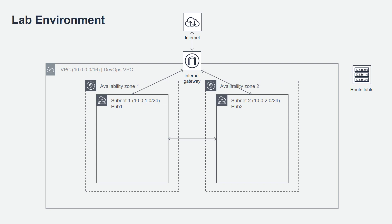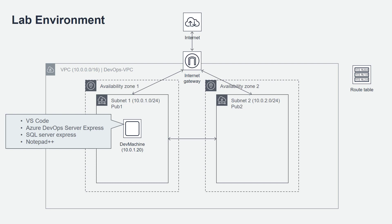What we are going to do next is spin up two EC2 instances. The first one is the dev machine with the IP address 10.0.1.20. It's very important to note this down because you are going to start this machine with this IP address. This machine we are going to spin up with an already pre-built image that has Visual Studio Code installed. It also has Azure DevOps Server Express and SQL Server Express already installed as its backend storage, and also some useful tools like Notepad++ installed. The Azure DevOps Server on this machine comes with a pre-configured set of projects that we are going to explore in the labs.